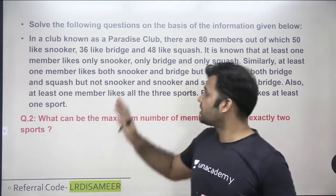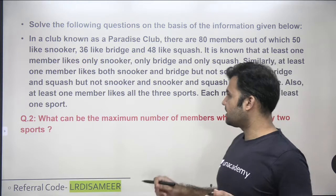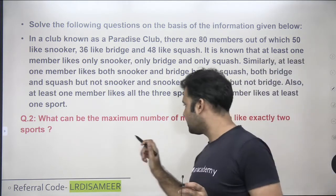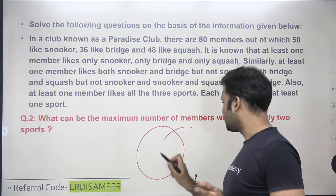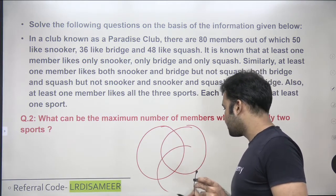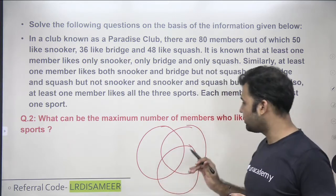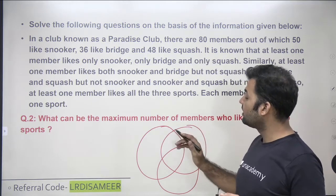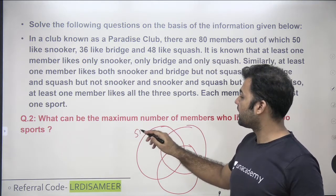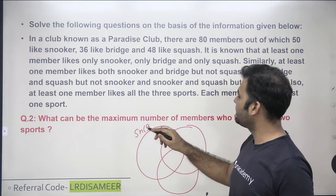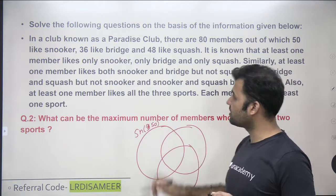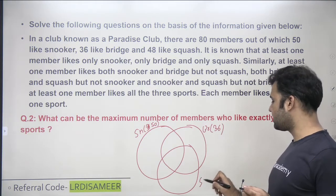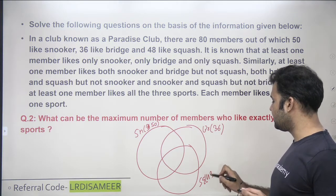The basic structure is telling us that there are three different games, and the members play at least one game — that means nobody lies outside of the region of these three sets. The three games are snooker, bridge, and squash. We have 50 players playing snooker, 36 members playing bridge, and 48 playing squash.